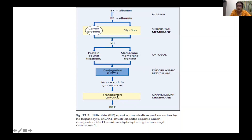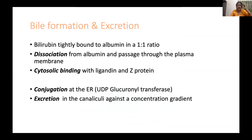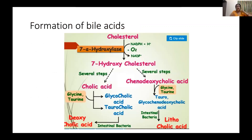There are transporters — now called ATP-related carrier proteins, part of phase three — where abnormalities in conjugation are the basis of Gilbert's syndrome and Crigler-Najjar syndrome. Partial deficiency of UGT enzyme leads to Gilbert's, which is not uncommon. Defects in secretion of bilirubin into the bile result in Rotor syndrome. The process: tight albumin binding, dissociation from albumin, cytosolic binding with ligandin and Z protein, conjugation in the endoplasmic reticulum, and finally excretion via canaliculi into bile acids.